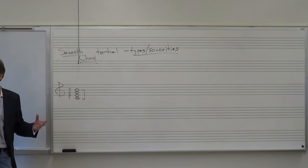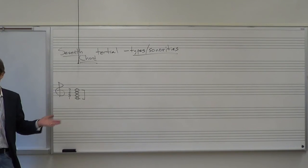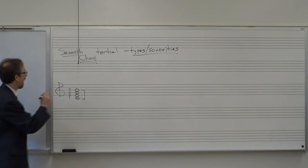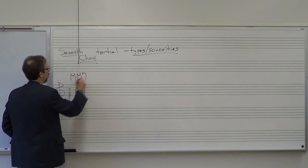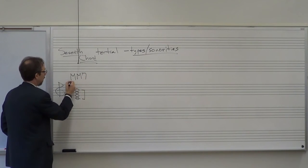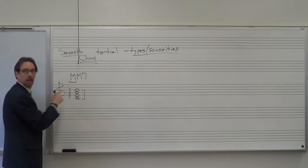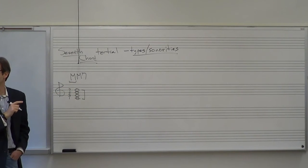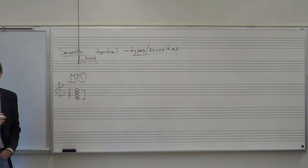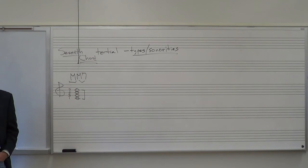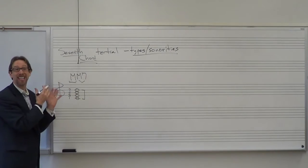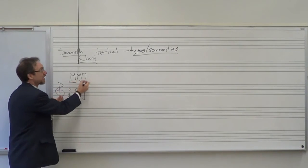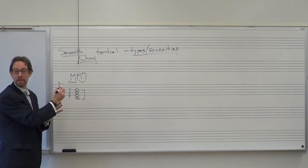The formula for a seventh chord is 1, 3, 5, 7. If you think of your C major scale and go 1, 3, 5, 7, you get a major triad with a major seventh. The first thing indicates the triad type; the second indicates the kind of seventh — in this case, a major seventh.